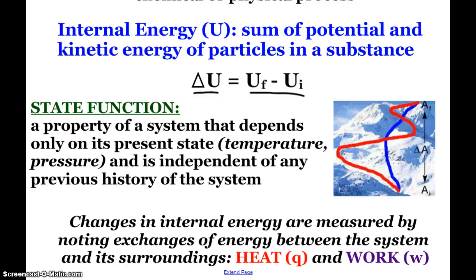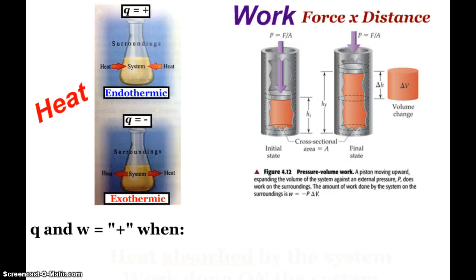And that's what it says here, changes in internal energy are measured by noting exchanges of energy between the system and its surroundings, specifically heat and work. And so again, we have talked about heat in the past. Heat that flows into the system will have a positive value, that's an endothermic process. Heat that flows out of the system to the surroundings will have a negative value, that's exothermic.